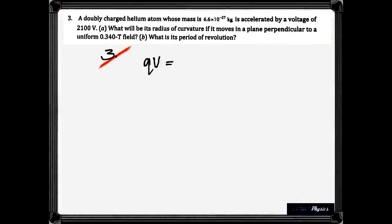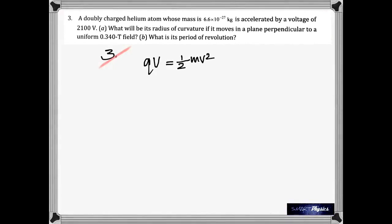Third question. It's a doubly charged helium atom. Doubly charged here means it's lost both electrons, or maybe gained 2 electrons. So it has a charge equal to twice that of the electron. Its mass is given. It's accelerated by a voltage of 2100 volt. What is the radius of curvature? And the magnetic field is given. Once again like the previous question from the voltage we need to figure out its velocity. So q times the voltage is one half mv squared. Find the velocity.